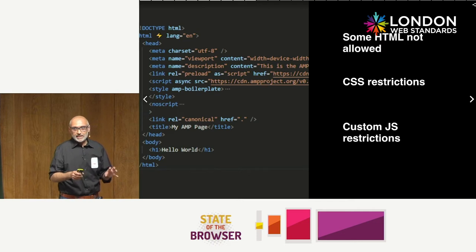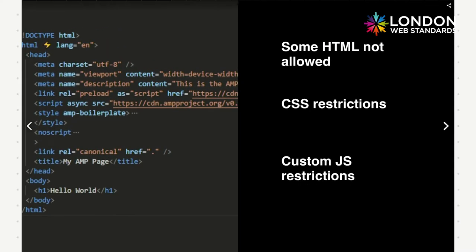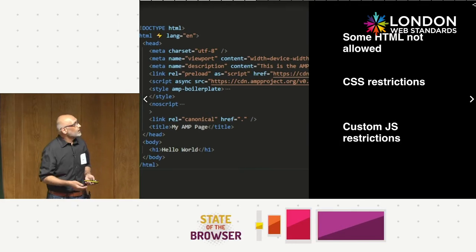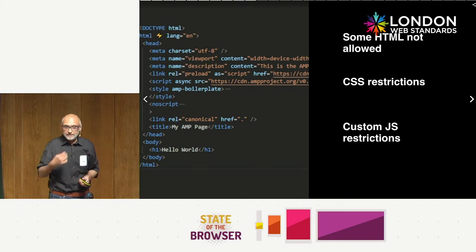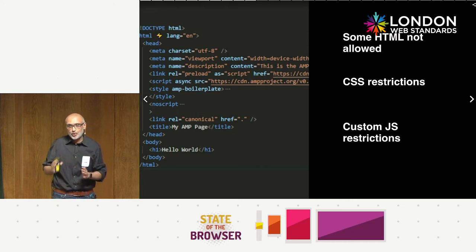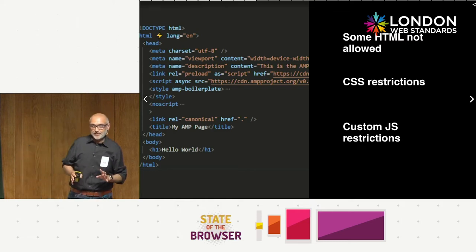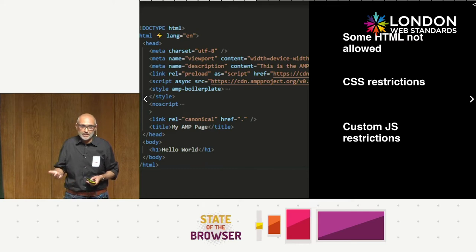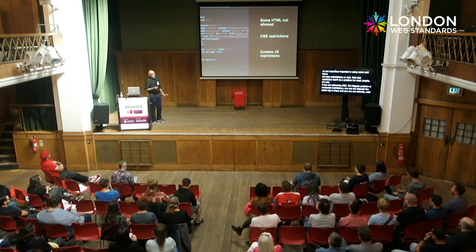To get all the benefits of AMP you have to follow the rules for a valid AMP page. There's a little boilerplate in your markup. Some HTML is not allowed — mainly tags that load resources like video and image — replaced by AMP equivalents. CSS must be in one inline style tag in the head. There are other restrictions too: you can't target some built-in elements, can't use !important in some cases, and there are size restrictions. The biggest restriction is custom JavaScript — no script tag, and until recently, no custom JavaScript at all.